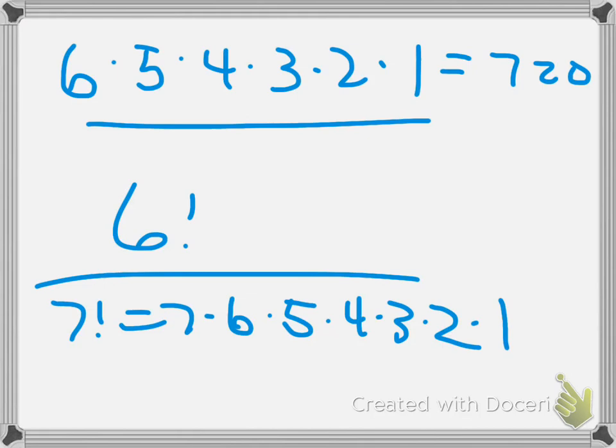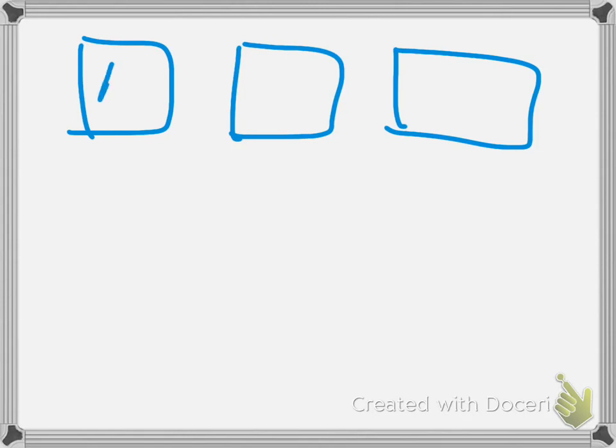It says sometimes a permutation uses only some of the available objects. So let's look at the next example. Suppose the state license plates begin with three letters. How many sets of three different letters can be used to begin the license plate? Now, how many letters are in the alphabet? 26. But we're only going to pick three of them. Oh boy. So that's a little bit different. With the first time, we have three numbers that we're going to take here. Letters, excuse me. After I pick one of them, how many do I have to choose from after that? 25. And then after I do that one, I only have 24, right?